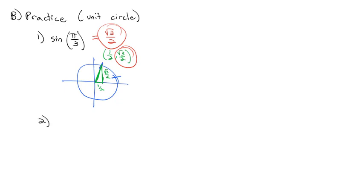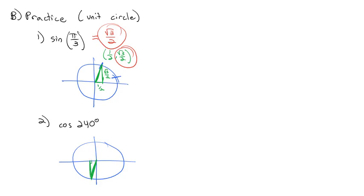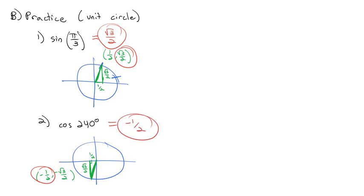Find the cosine of 240 degrees. 240 degrees is a little less than 270, so it's in the third quadrant. The short distance is 1/2 and the long distance is √3/2. Because it's to the left and down, the coordinates are (-1/2, -√3/2). Cosine is the x-coordinate, so the cosine of 240 degrees is -1/2.